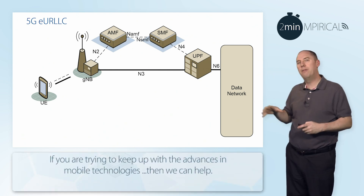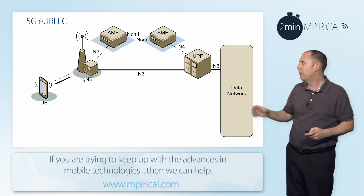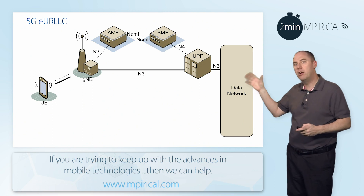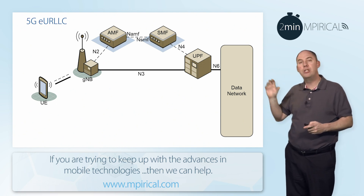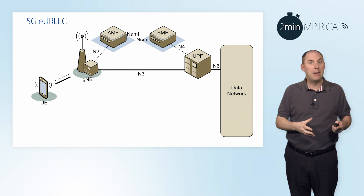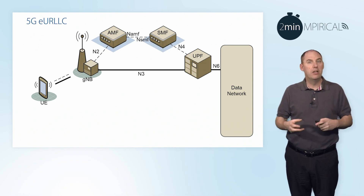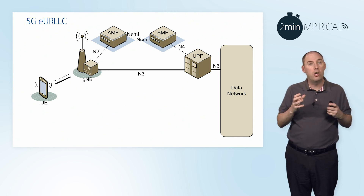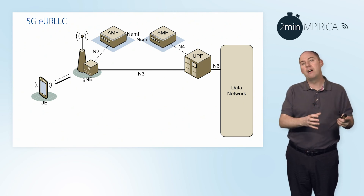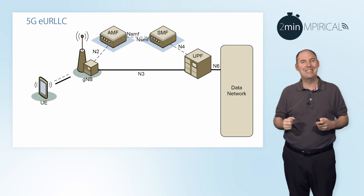Here we have a typical architecture. We've got a device, we've got a gNodeB — a new radio NodeB. We've got our 5G core. And as you can see in the big black line in the middle there, that's the user plane — typically a guaranteed bit-rate service, or GBR service, going from the device all the way to the user plane function and out into the data network. The dotted lines are the control.